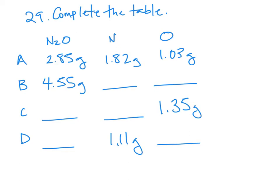For the table, we're given sometimes the mass of the compound, sometimes the mass of nitrogen, and sometimes the mass of oxygen. For sample A, we have all three masses given, which is great. Based on this sample, we can find the ratios of nitrogen to oxygen in the compound and use that information to fill in the empty spots.